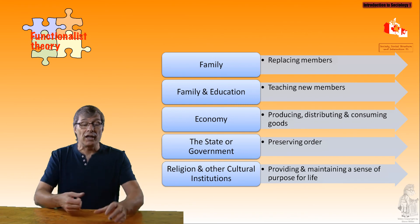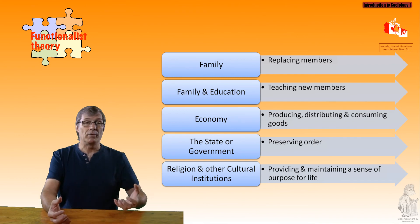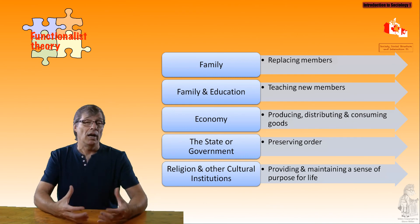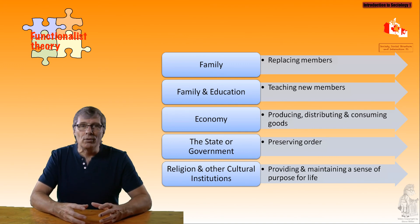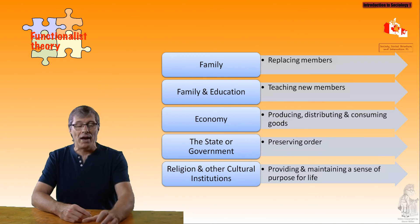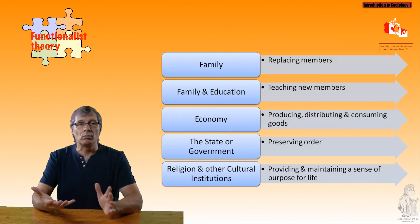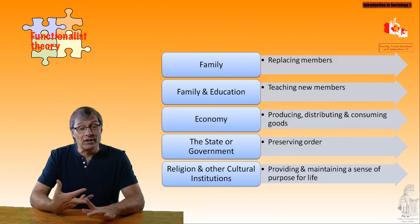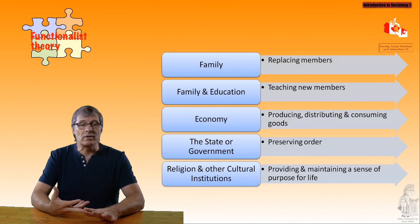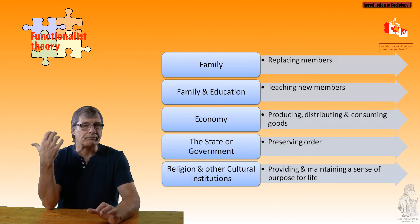Three: producing, distributing, and consuming goods and services. All societies must provide and distribute goods and services for their members. This is essentially having an economy, a means by which to pay people and give money in order for them to pay for the goods and services that they need and want. Four: preserving order. Every group or society must preserve order within its boundaries and protect itself from attack from outsiders. This would involve, in terms of Canada, government, the military, and other related institutions that would help do this guarding.